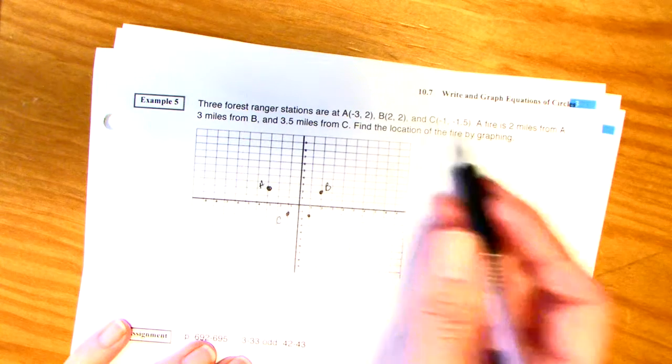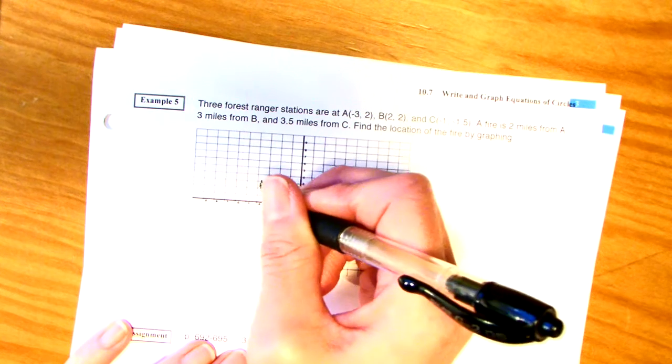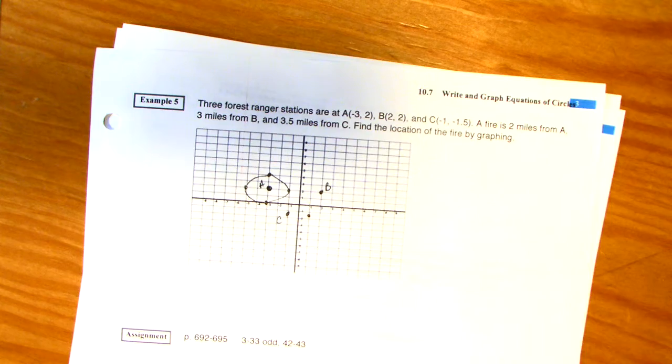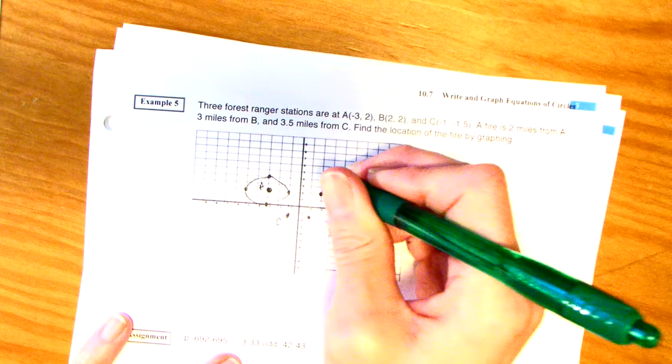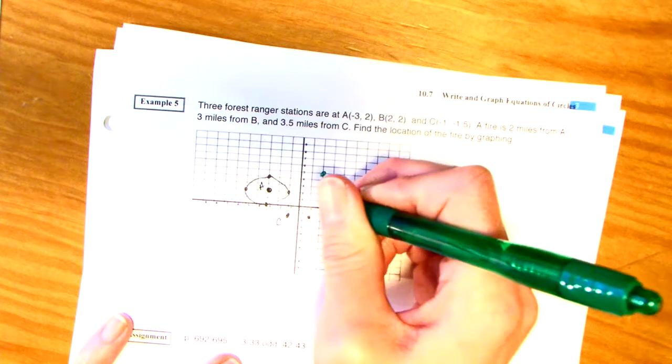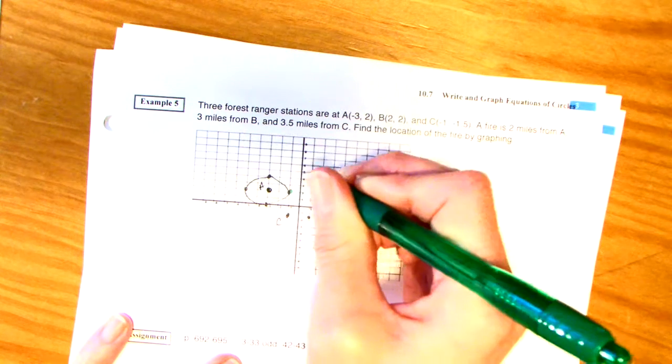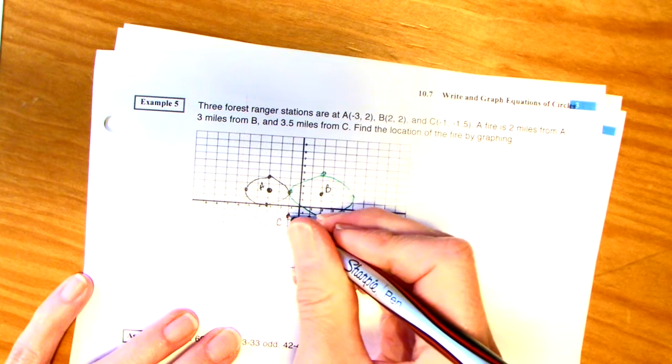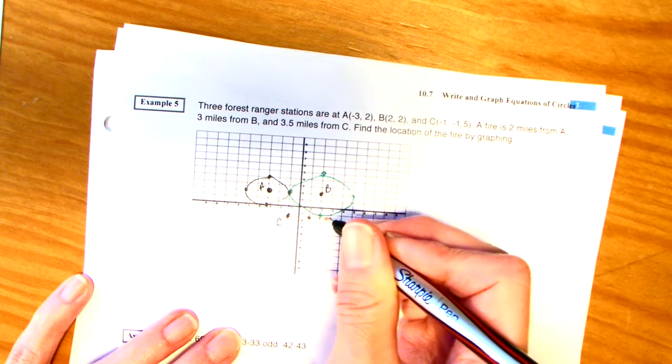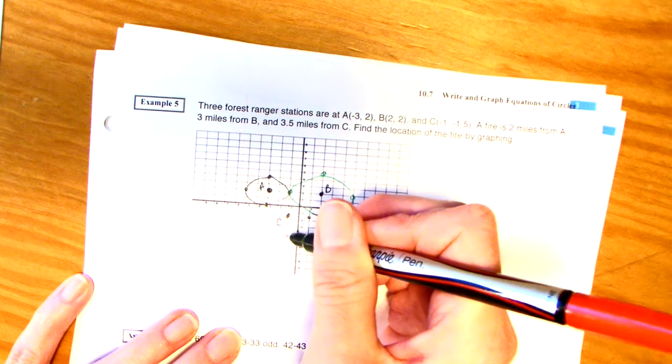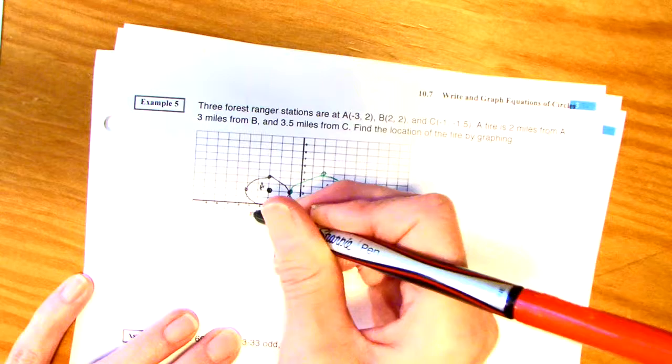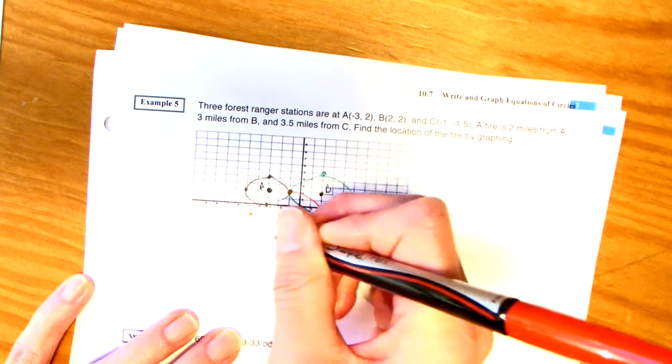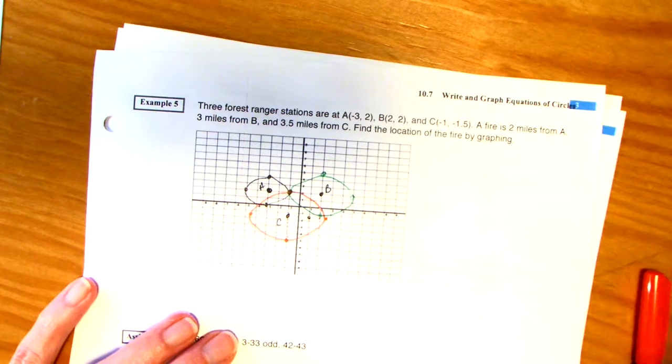Alright. So, it's got to be 2 miles from A. So, I'm going to draw a circle. So, if it's 2 miles from A, it can be anywhere on that circle. And then, it has to be 3 miles from B. So, 1, 2, so anywhere on this circle. I think I already found it right there. But, let's finish the problem. And then, it has to be 3 and a half miles from C. Okay, so, 1, 2, 3 and a half. 1, 2, 3 and a half. And then, 1, 2, 3 and a half. Pretty interesting way to solve that problem, huh? Where is the fire? The fire is right here.